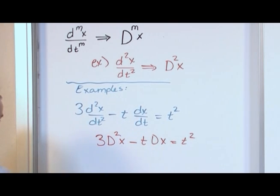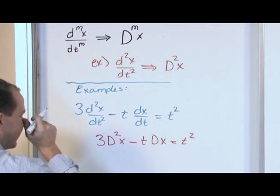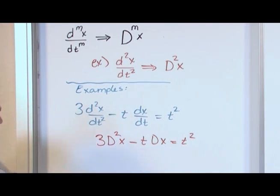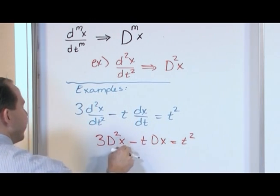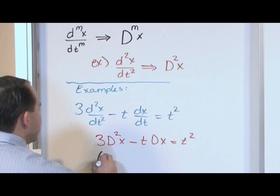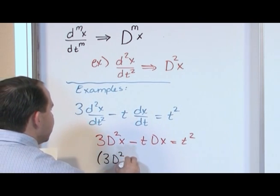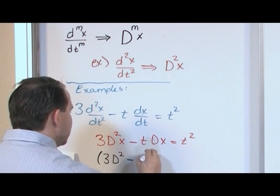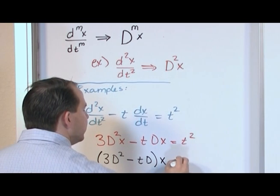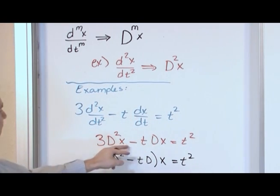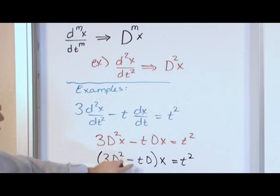Now, there's one little tiny thing that I do want to tell you is that most of the time the way you do it is you can kind of treat these guys as like a sort of equation. It is an equation, it's a differential equation, but you can factor this expression much like an algebraic expression. For instance, if I wanted to factor out an x, x is common to both of these terms. Then the way I would do it would be 3d squared minus t times d, close parentheses, x would be on the outside, equals t squared.